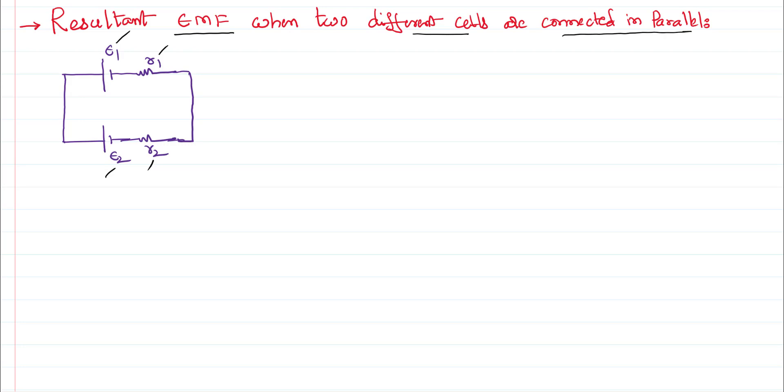In series there is no issue, you can just add them. And if the cells are the same, even if they are in parallel, then we can say resultant EMF is the EMF of any one cell. The problem comes only when the two cells are different, they are different cells with different EMFs.